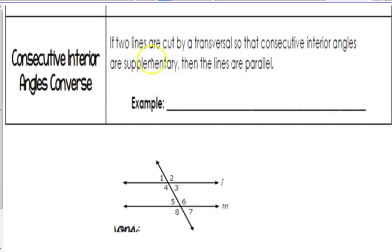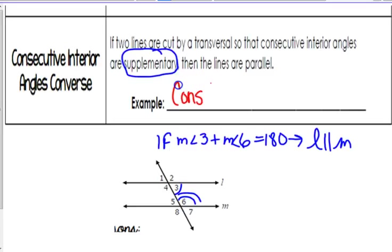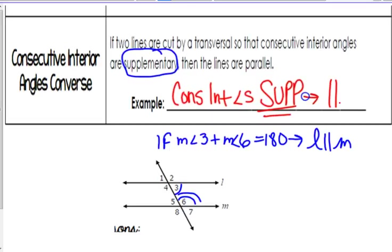This is the one where consecutive interior angles are supplementary. If you knew angles 3 and 6 added up to equal 180, then L would have to be parallel to M. The big deal here is to remember that it's supplementary. So: consecutive interior angles that are supplementary make parallel lines.